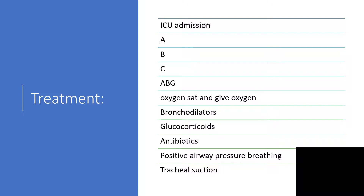Arterial blood gases to deal with either respiratory acidosis or alkalosis as the case may be when hyperventilating. Monitor oxygen saturation and give oxygen as appropriate. Use bronchodilators to create wider space for whatever secretion is along the respiratory tract, and glucocorticoids to decrease the inflammatory process. Use antibiotics if there is secondary superimposed bacterial infection. Positive airway pressure breathing and tracheal suctioning.